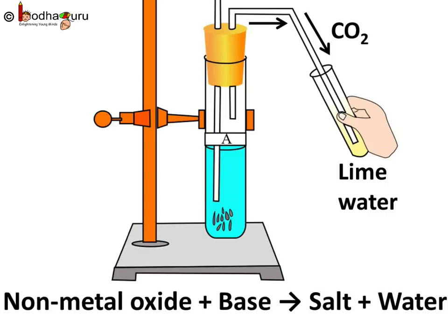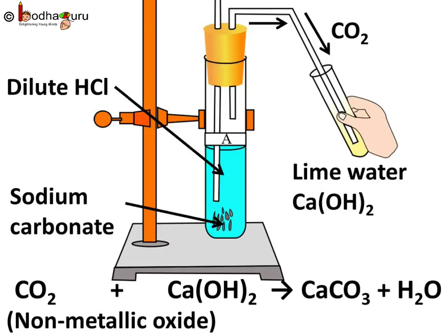On the other hand, a base produces salt and water in reaction with non-metallic oxides. Remember, when we passed carbon dioxide through lime water, i.e. calcium hydroxide solution, we got a white precipitate of calcium carbonate. This is represented by the chemical equation: CO2 + Ca(OH)2 → CaCO3 + H2O.